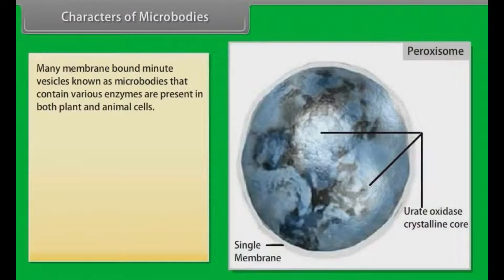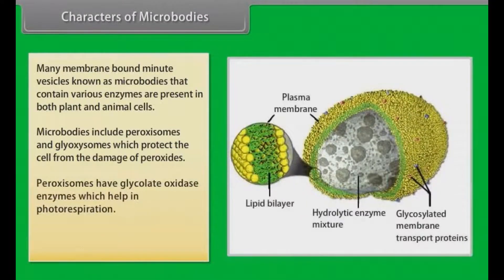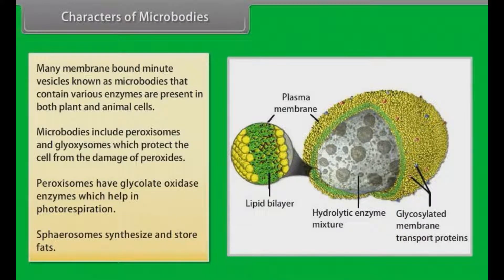Characters of microbodies: Many membrane-bound minute vesicles known as microbodies, that contain various enzymes, are present in both plant and animal cells. Microbodies include peroxisomes and glyoxysomes, which protect the cell from the damage of peroxides. Peroxisomes have glycolate oxidase enzyme, which helps in photorespiration. Spherosomes synthesize and store fat.